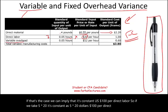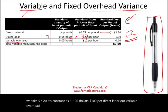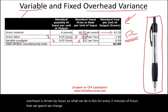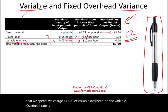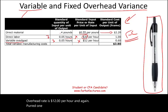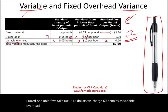Our variable overhead is driven by hours. So what we do is this: for every three minutes of hours that we spend, we charge $12 of variable overhead. So the variable overhead rate is $12 per hour. Per one unit, if we take 0.05 times $12, we charge 60 cents as variable overhead cost per unit. We'll ignore the fixed overhead cost for now.